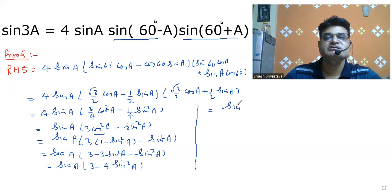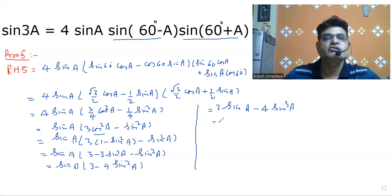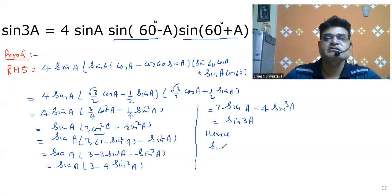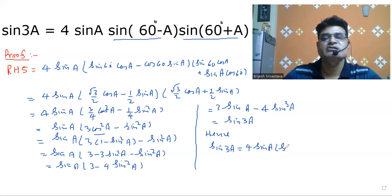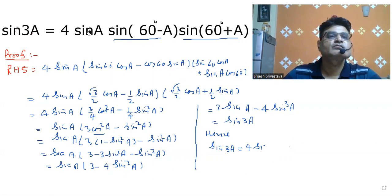So we have proved that Sin 3A = 3 sin A - 4 sin³A, which confirms the formula: Sin 3A = 4 sin A · sin(60° - A) · sin(60° + A).